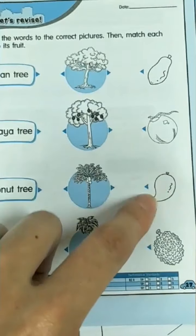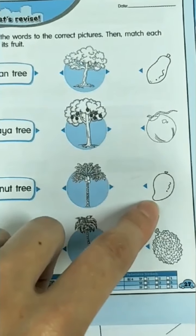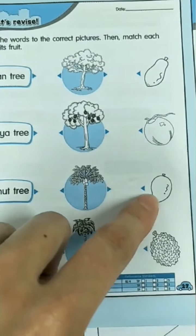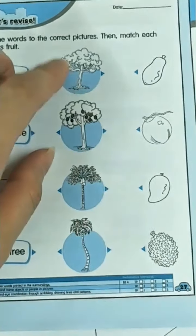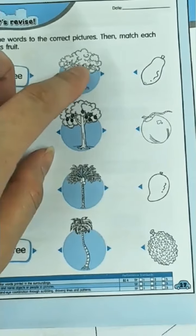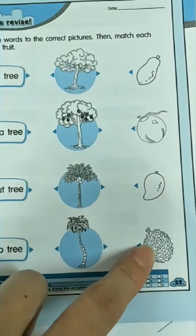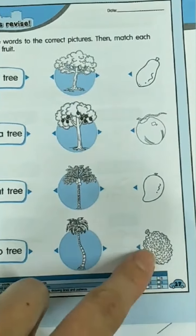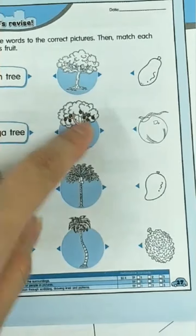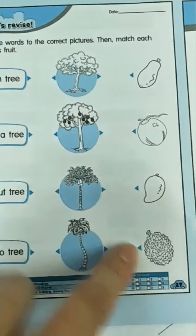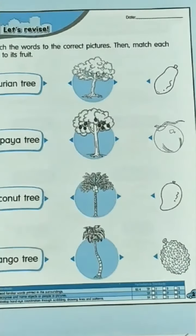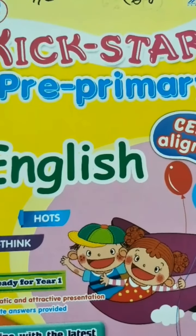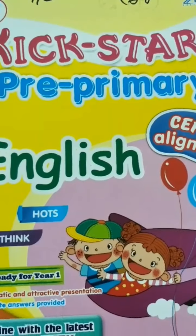What is this? Yes, this is mango. Mango. How about this one? Durian. Let's do some pre-primary activity.